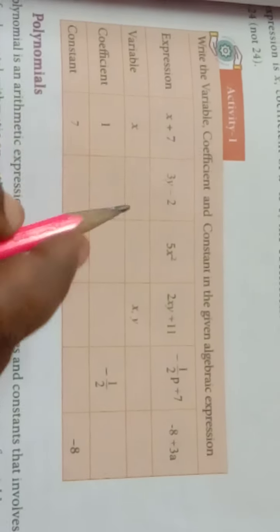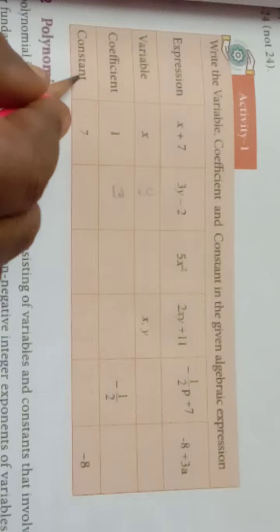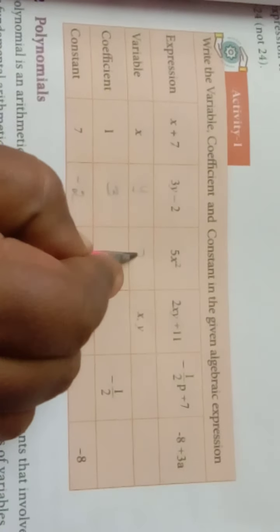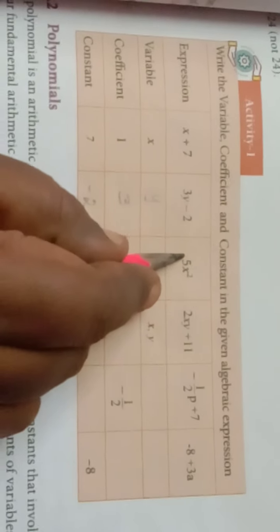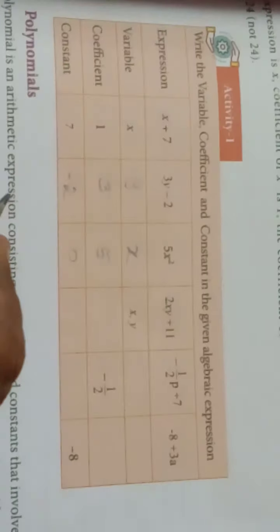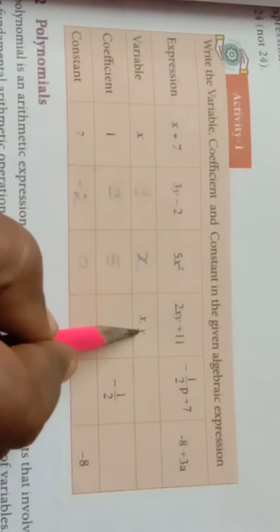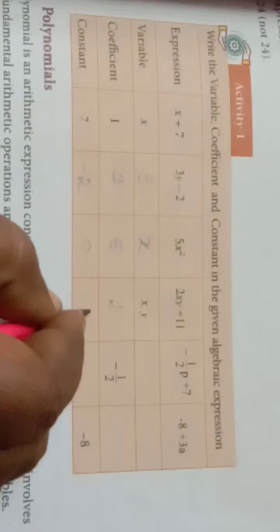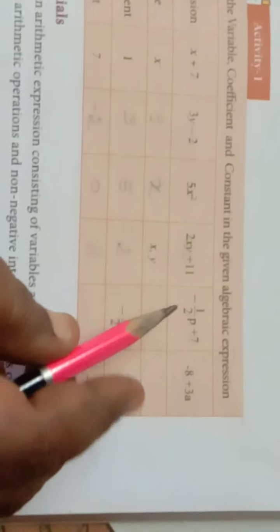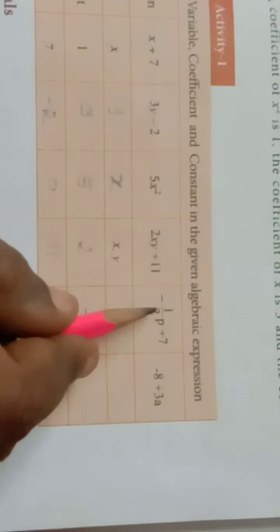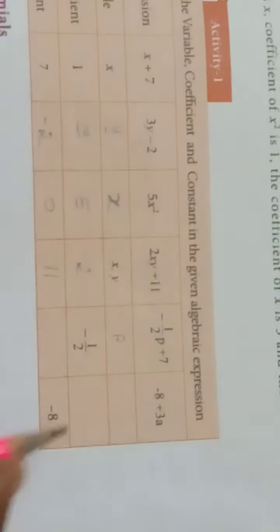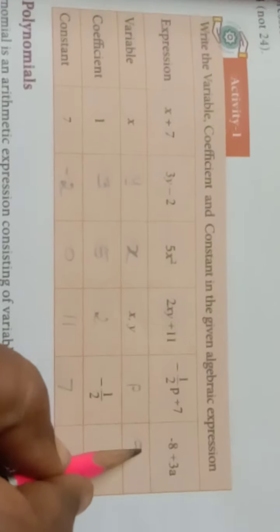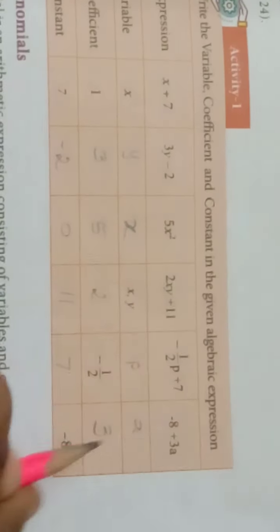3y minus 2: variable is y, coefficient of y is 3, constant is minus 2 — with the sign. Next: variable is x, coefficient of x² is 5, constant is 0 — not there. Next: two variables x and y — so x, y. Coefficient is 2, constant is plus 11. Next: variable is p, coefficient of p is minus 1 by 2, constant is 7. Next: variable is a, coefficient of a is plus 3, constant is minus 8.